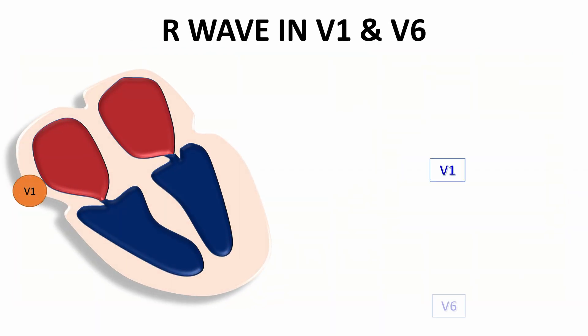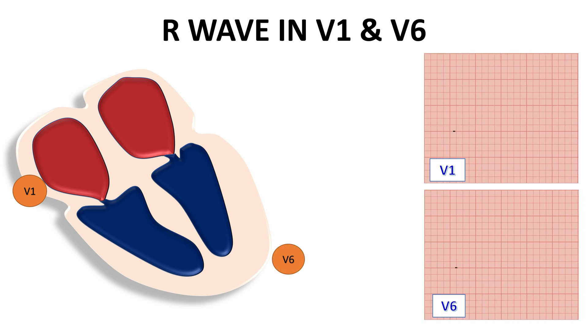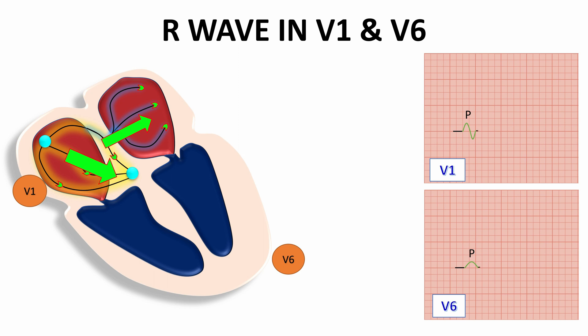Now let's look specifically at V1 and V6. If we place only V1 and V6 on the heart, we can see that V1 looks at the heart from the right, and V6 looks at the heart from the left. Atrial depolarization is drawn as a biphasic P wave in V1 and a positive wave in V6. The AV nodal delay is represented by the PR segment. Septal depolarization, from left to right and upward toward V1, draws a positive small R wave in V1 and a small Q wave in V6.